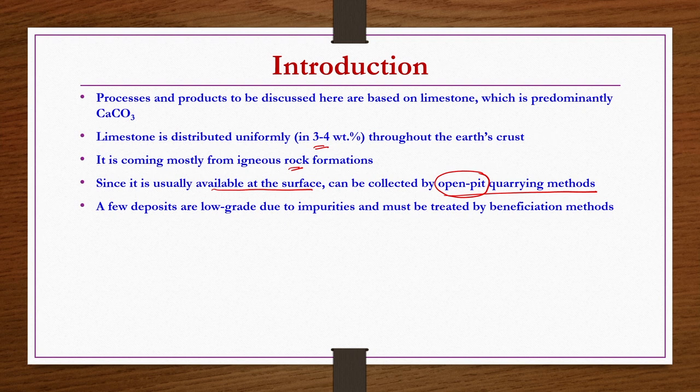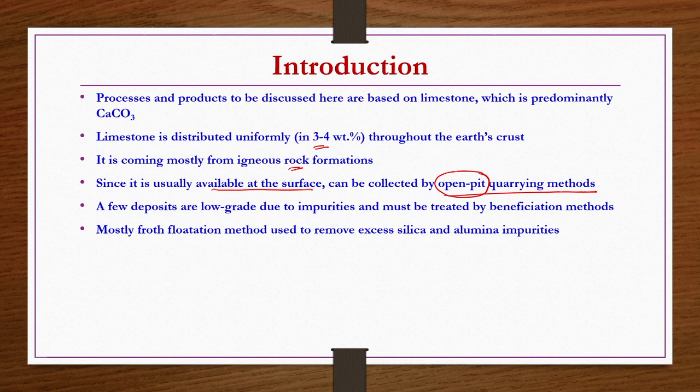A few deposits are low-grade because of impurities, so those impurities must be removed. For the beneficiation of a limestone ore, froth flotation is usually used. There may be other processes as well, but mostly the froth flotation method is used to remove excess silica and alumina impurities.